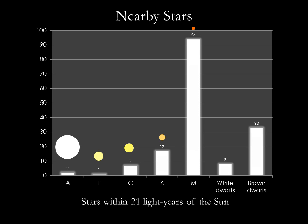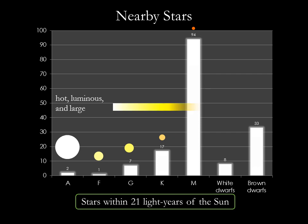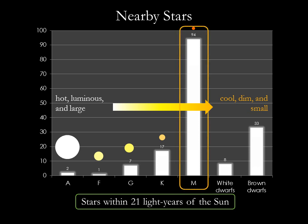This histogram shows the number of stars of different temperatures within 21 light-years of the Sun. Remember, our entire Milky Way is about 100,000 light-years across, so this survey is very local and contains only a tiny fraction of the billions of stars in our galaxy. On this chart, stars on the left are hotter, more luminous, and larger than those on the right. We can see that most of the stars in our neighborhood are cool, low-luminosity, low-mass, M-type stars.